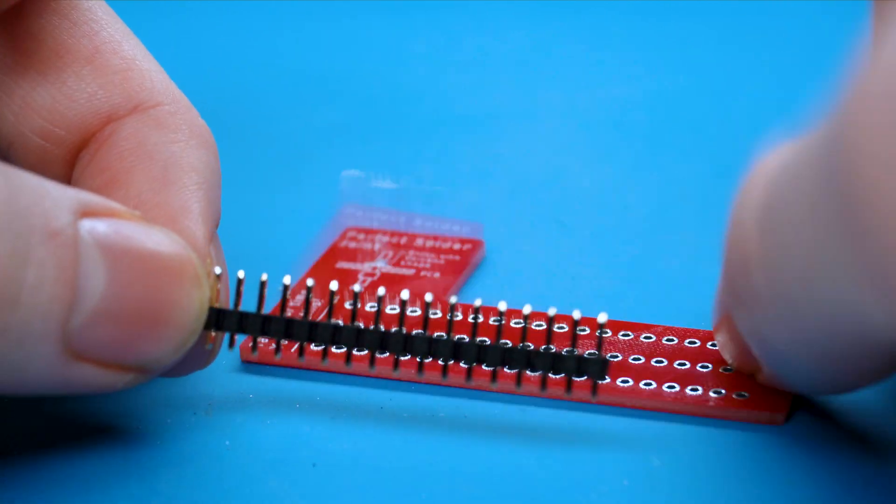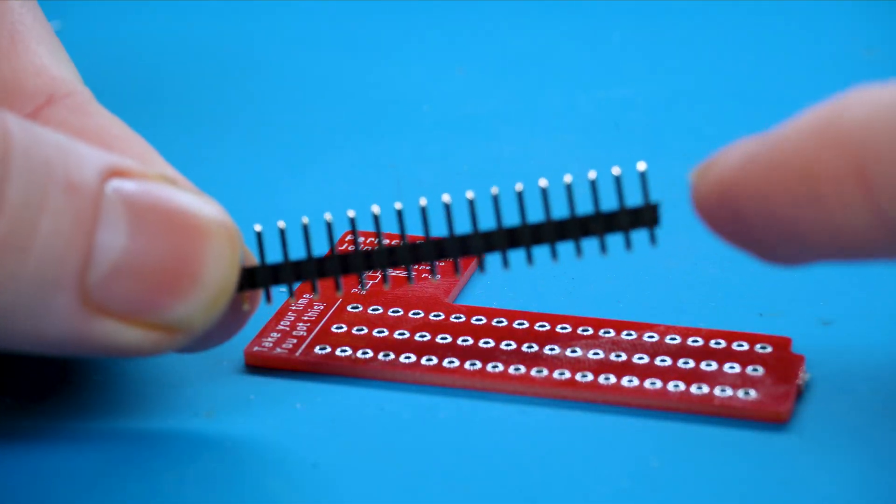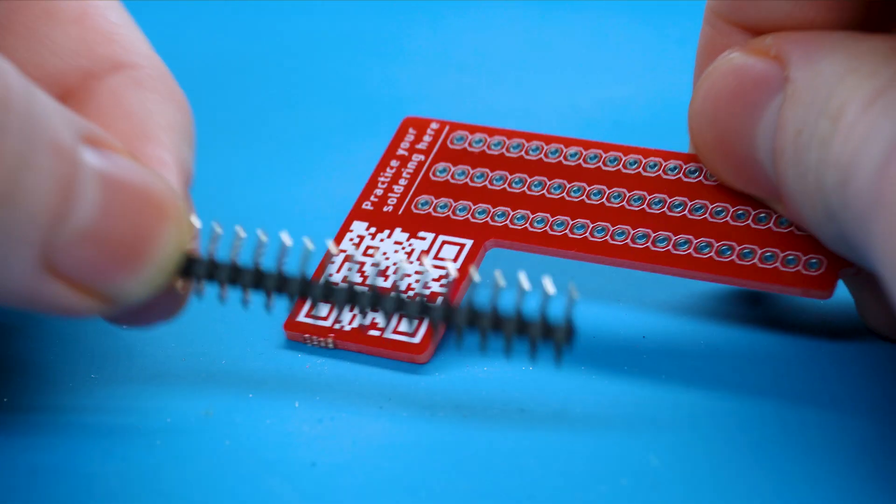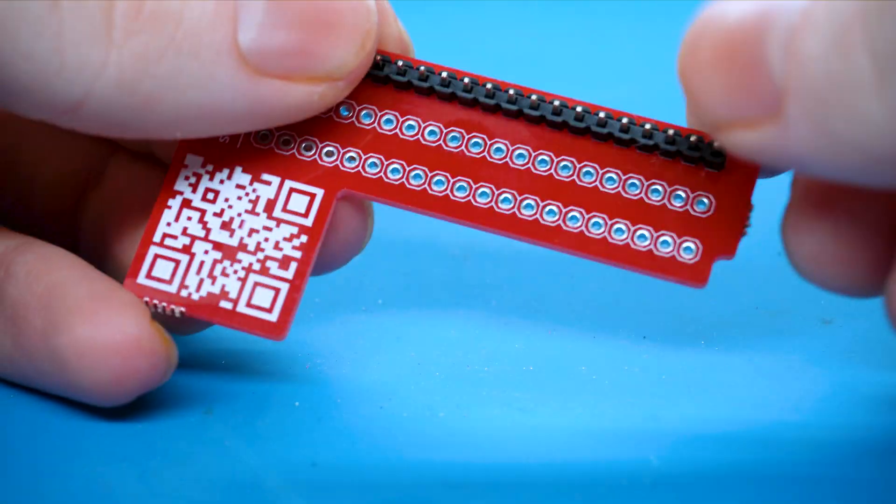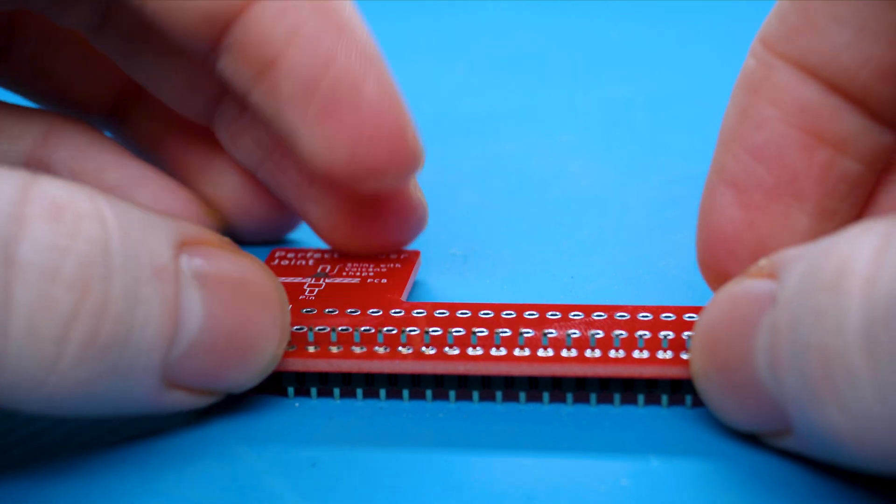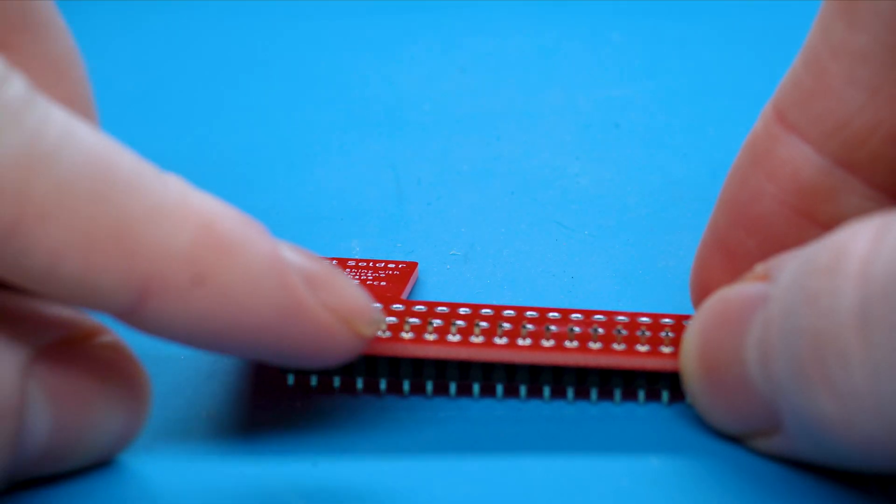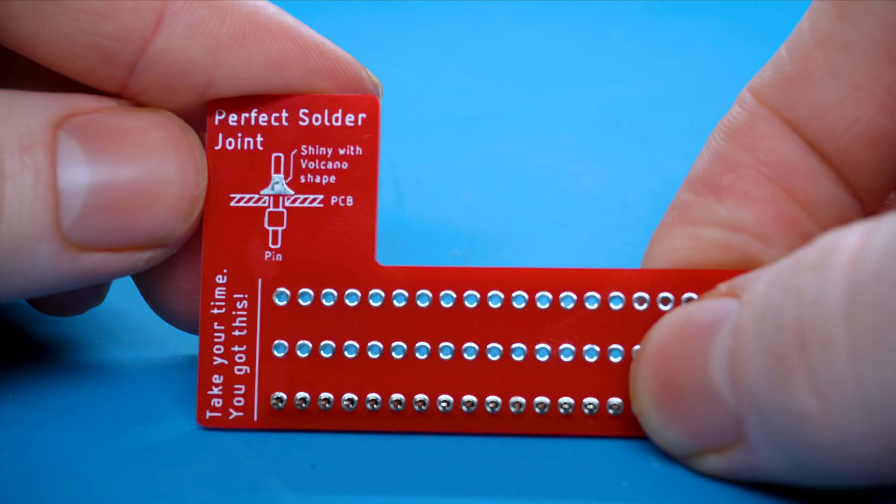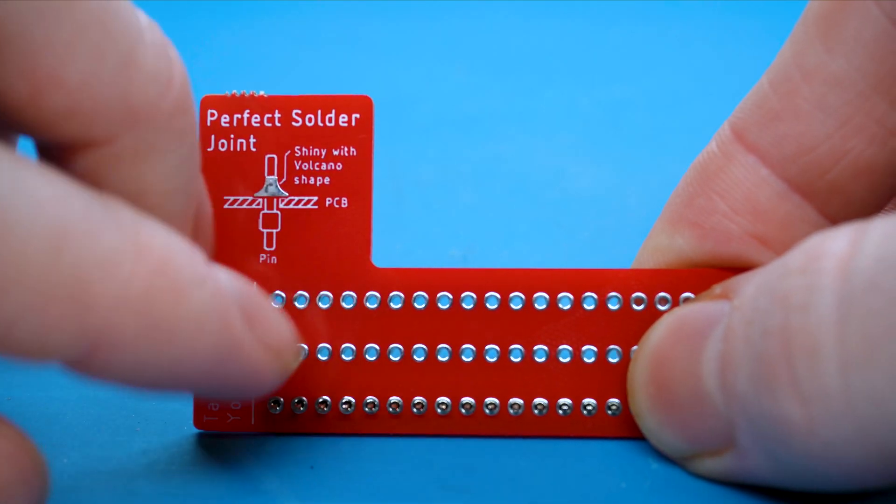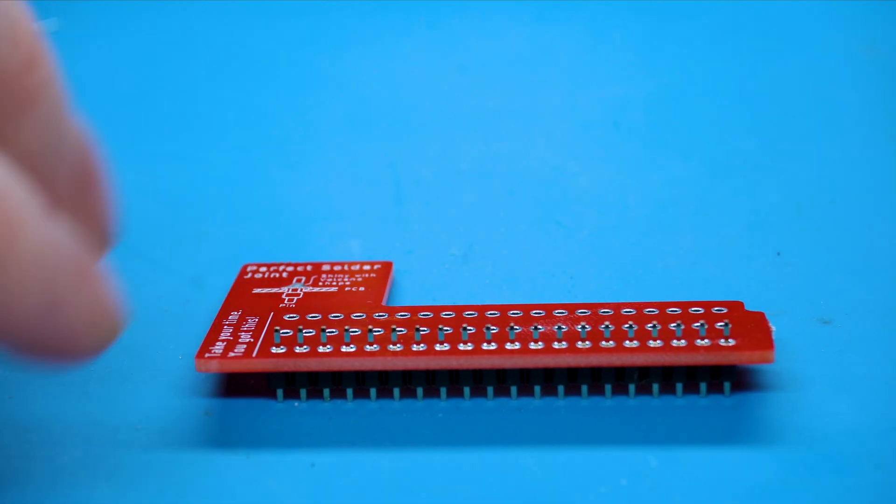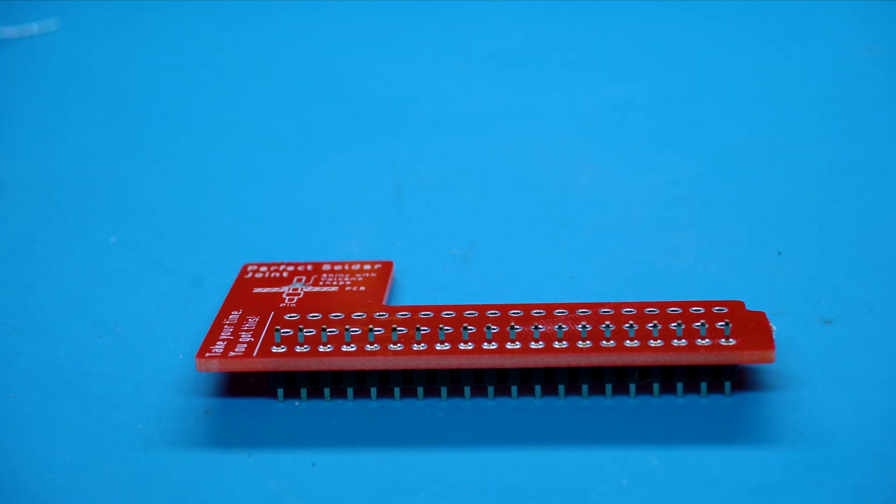So now we want to grab the header pins and the practice soldering board, and you can see that the header pins have a longer side to it. So flip the soldering board over, push the pins through so the longer side is poking through, and now we're ready to start soldering. You'll also notice that there's a diagram on the board of the perfect solder joint which shows the shiny, volcano-like shape that I'll go into more detail about in a bit.